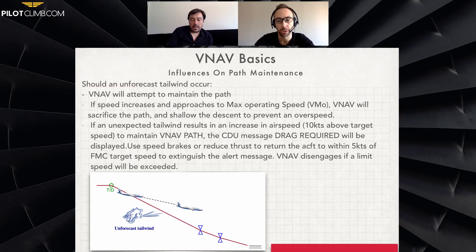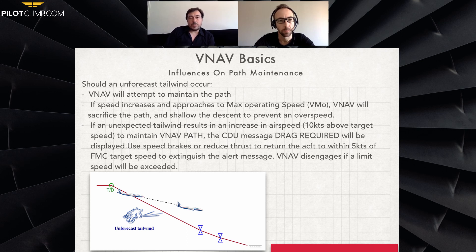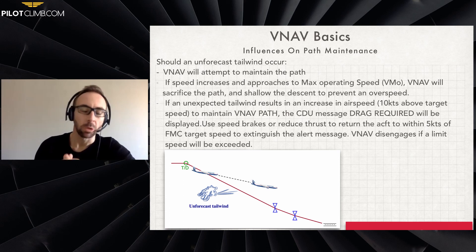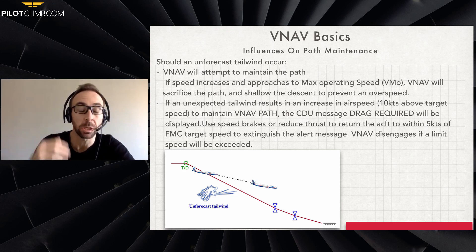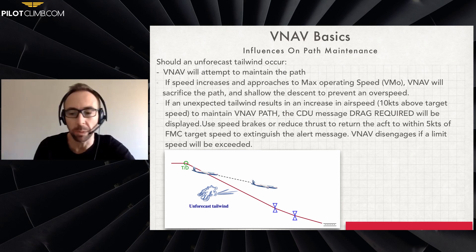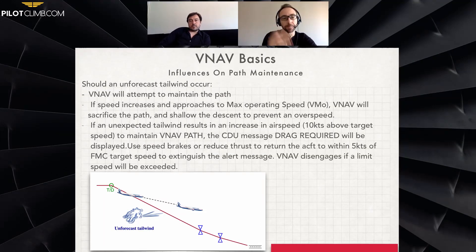If an unforecast tailwind results in an airspeed increase of more than 10 knots to maintain the VNAV path, a CDU message 'DRAG REQUIRED' will be displayed. The most useful response is to use speedbrakes, since in an econ speed descent thrust is already at idle — so we can shallow the path or use speedbrakes to prevent further speed increase. The aircraft has different priorities: the path is a good priority, but safety is more important. If VMO/MMO would be exceeded, the aircraft says the path doesn't matter — speed protection is the priority.